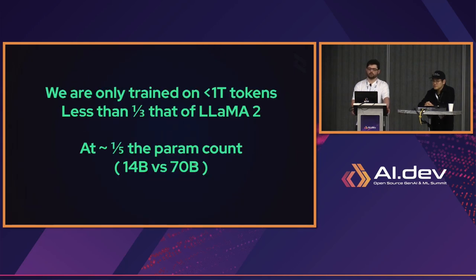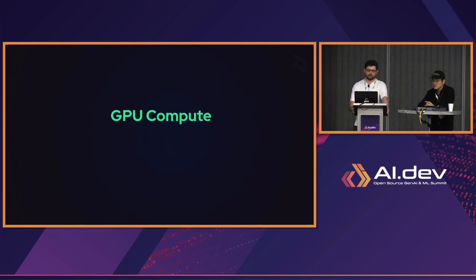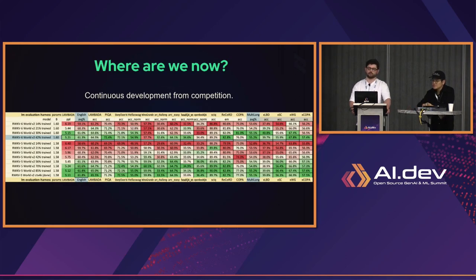What's the catch? We're only trained on less than one trillion tokens, and we are currently in the midst of training more. But even the old V4 Pile model matches other transformers of similar size in scaling laws. As they say, AI models want to work. What's stopping us? GPU compute. We're doing a lot of work putting together compute to train more and larger models. Our open source project is supported by Eleuther AI and Stability AI. We're still developing even now — more and more models that perform better than previous generations.